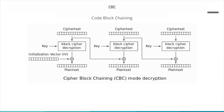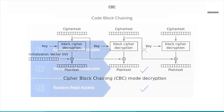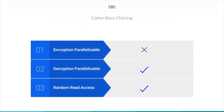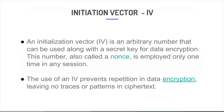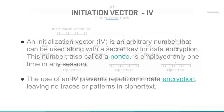In decryption, the process is inverted: the first block of ciphertext is decrypted and XORed with the IV to retrieve the first block of plaintext. Similarly, the second block after decrypting is XORed with the first block of ciphertext. Note that the encryption process is not parallelizable, whereas the decryption process is. It also allows random read access. An Initialization Vector (IV) is a block of bits used to randomize the encryption, producing distinct ciphertext even if the same plaintext is encrypted multiple times.